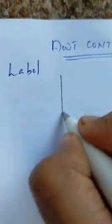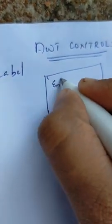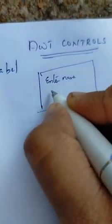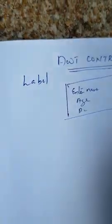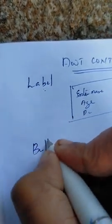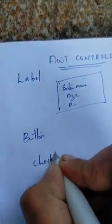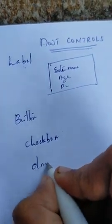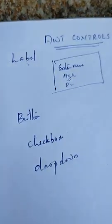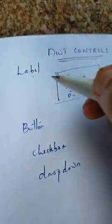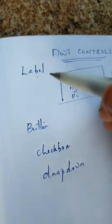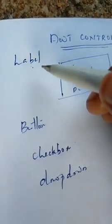This is the Label. You can use the form to enter your name, age, etc. You can use the label here. You can use the button, checkbox, drop-down box. You can use the main item. So, we can use the program here.